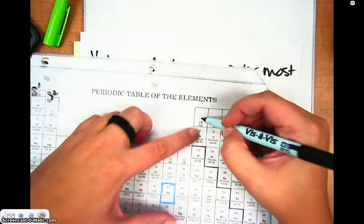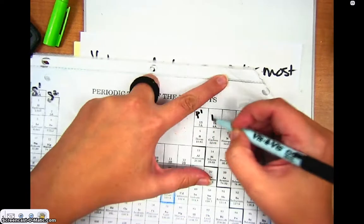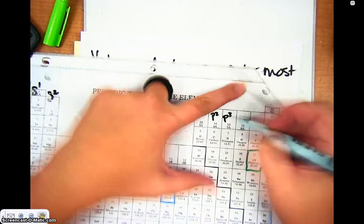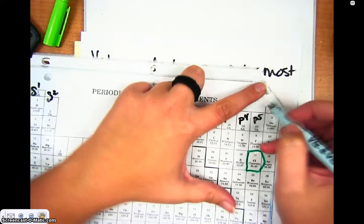Over here, they're going to have P1s as their outermost. These will have P2s, P3s, P4s, P5s, and P6s here.